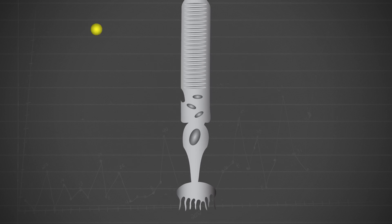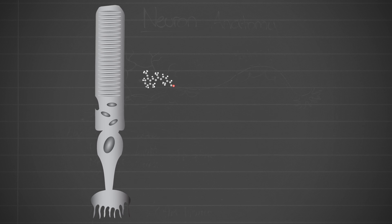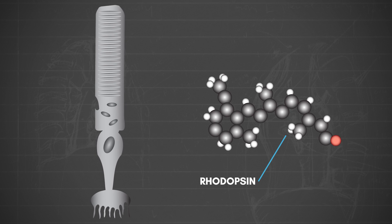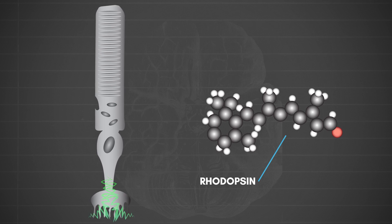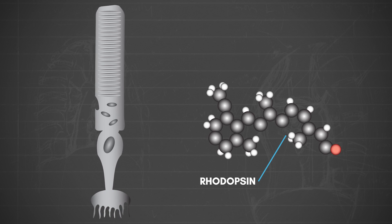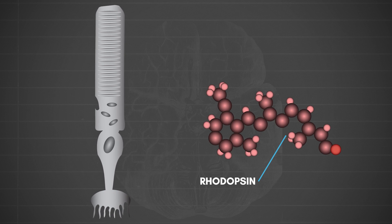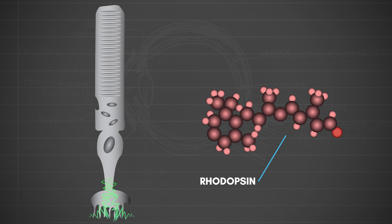When photons hit rod cells, a photoreceptive pigment within the cell called rhodopsin changes its shape. This initiates the process of triggering a nerve impulse. Rhodopsin can also change its shape spontaneously from ambient heat. This triggers a false nerve impulse.